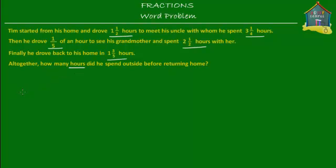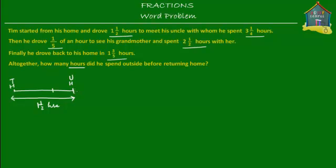Let's put all this information on a timeline, because that's what this question is all about. So Tim starts from his home and drives one and a half hours. So from here to here is one and a half hours. He starts from his house — TH, Tim's house — and drives one and a half hours to reach uncle's house, UH.